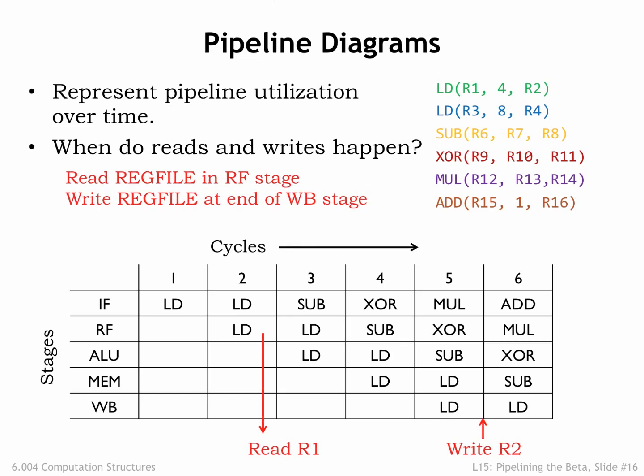To understand data hazards, let's first remind ourselves of when the register file is read and written for a particular instruction. Register reads happen when the instruction is in the RF stage — when we're reading the instruction's register operands. Register writes happen at the end of the cycle when the instruction is in the write-back stage. For example, for the first load instruction we read R1 during cycle 2 and write R2 at the end of cycle 5. In cycle 6, we're reading R12 and R13 for the instruction in the RF stage and writing R4 at the end of the cycle for the load instruction in the WB stage.